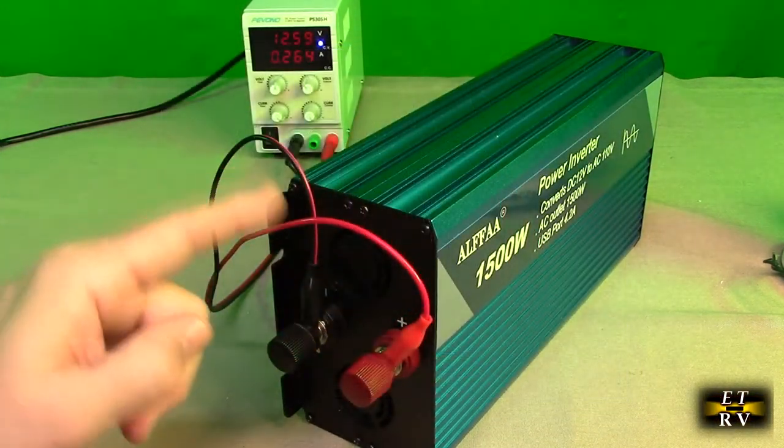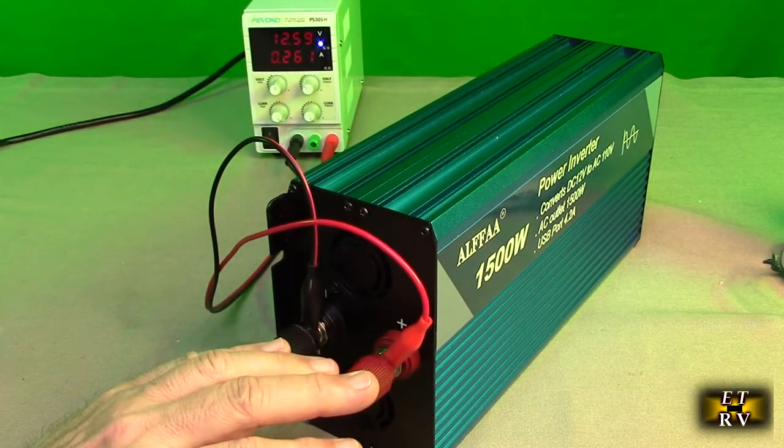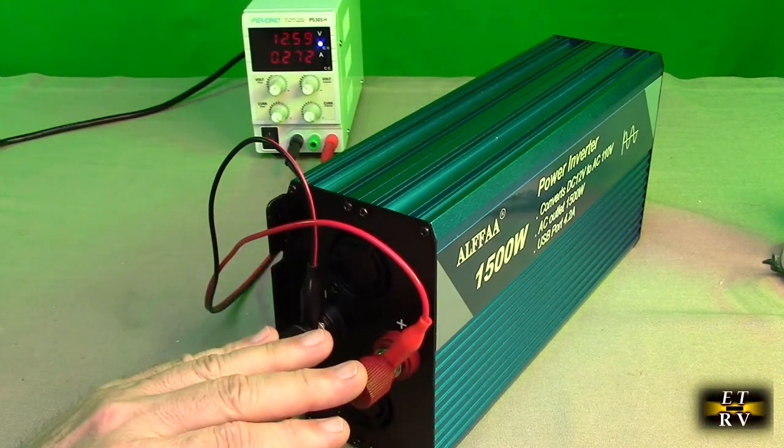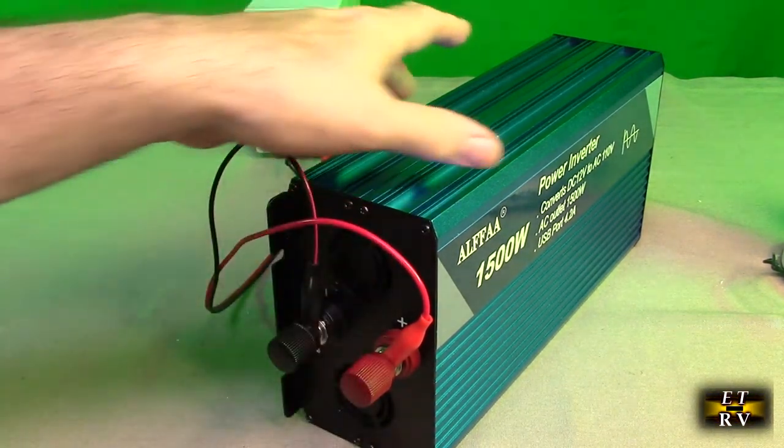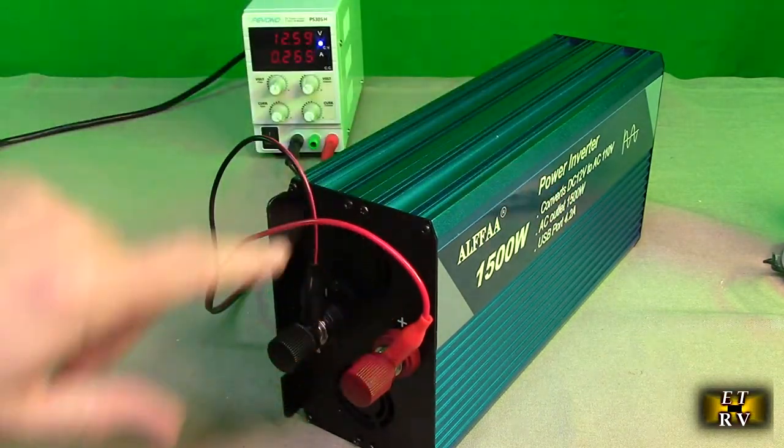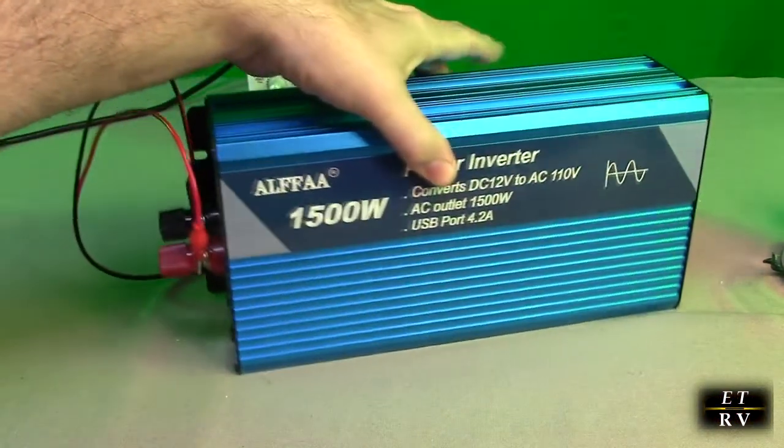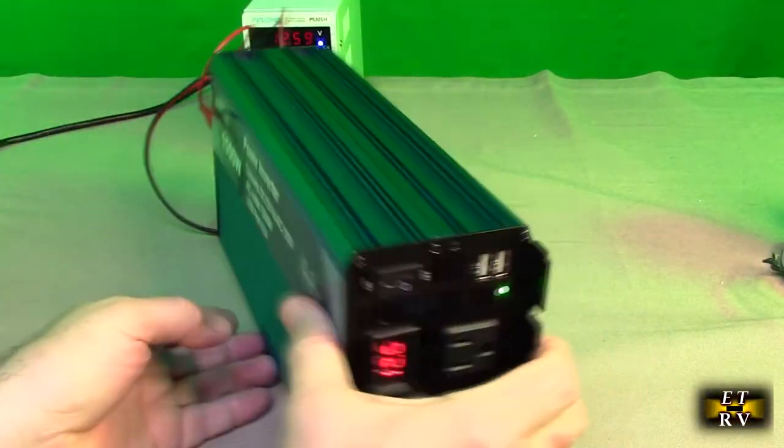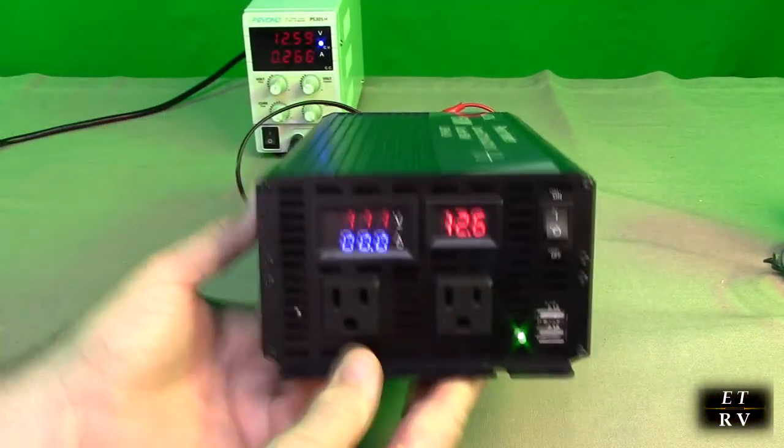This current, when you're under a maximum load of 1500 watts, is over 125 amps, so the cables have to be really thick. For demonstration purposes, I've got thin cables on there. We're going to show you the whole operation of this.